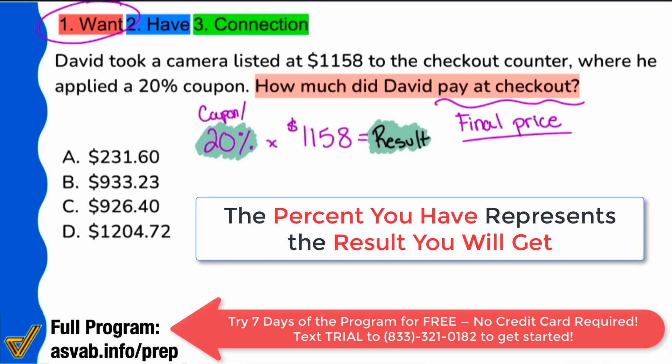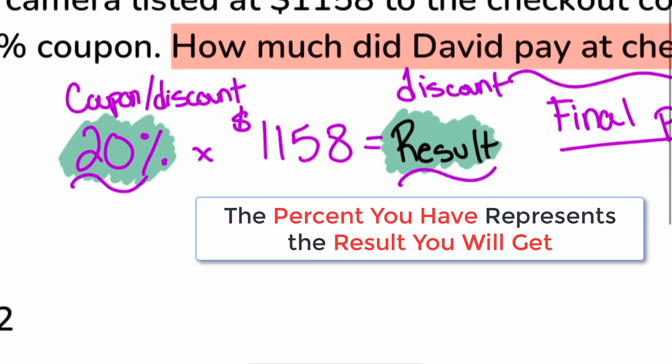And so what that means, my Math Party people, what that means is that the 20% that we're given, it represents the coupon, a discount, however you'd like to say it. And now that we have that, since that's the percent we're applying, the result that we get also represents the amount of that coupon or that discount. So my party people, let's go ahead and zoom in right there. Hopefully that makes sense. Remember, when it comes to applying the percent within the formula, the percent that you apply and the result, what's by itself after the equal sign, those represent the same idea.